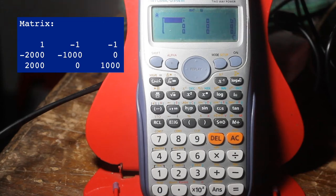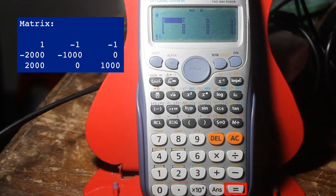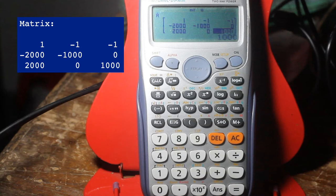Enter the first element. Then click equals to place the cursor on the next field. Do this for all elements of the matrix.